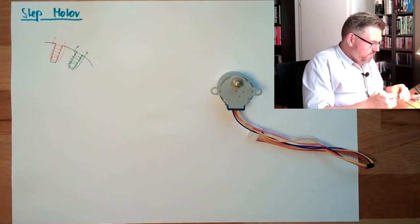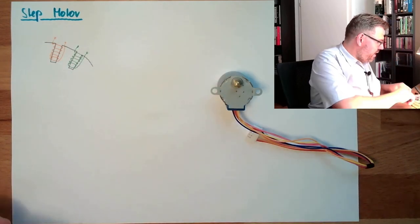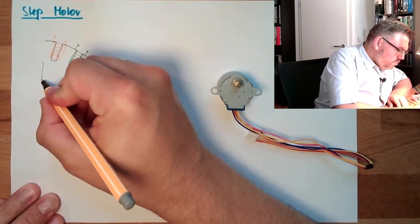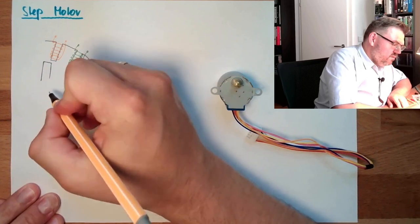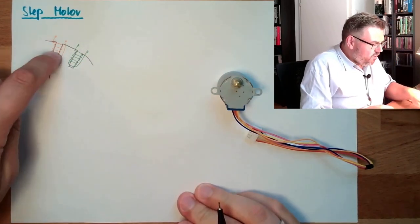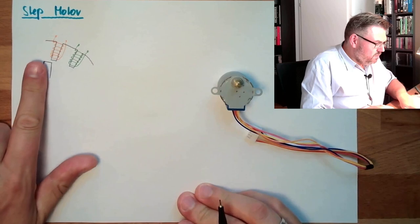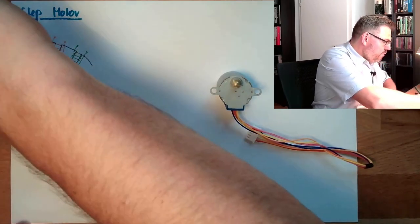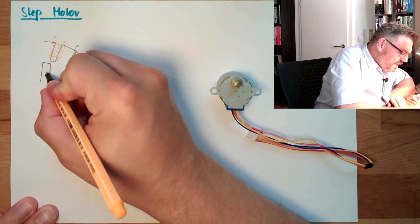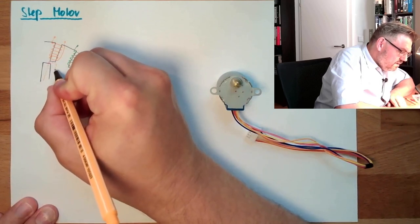Now imagine, we have here something which is attracted to a magnetic field. If we turn on this coil, this will move exactly to this position. So we will see it standing like this.